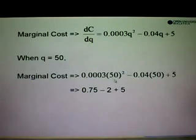So 50 square is 2500 times 0.0003. The answer is 0.75. And 0.04 times 50. The answer is negative 2 plus 5. So 5 minus 2 is equals to 3. 3 plus 0.75. The answer is 3.75.